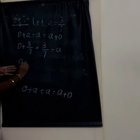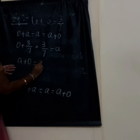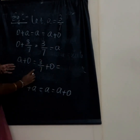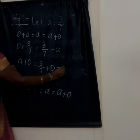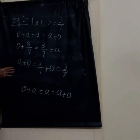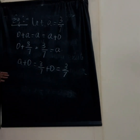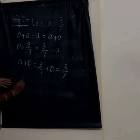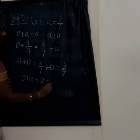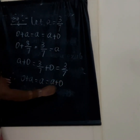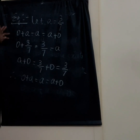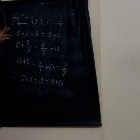And also A plus 0: that is 3 by 7 plus 0, which is nothing but 3 by 7. Therefore, 0 plus A is equal to A is equal to A plus 0. It satisfies the identity property for addition. Rational numbers satisfy the identity property.